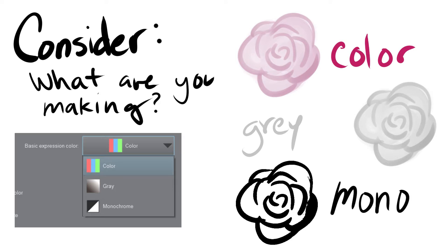And then you have mono, which I have never used in a serious art piece, because it's just black — you don't even get gray. It looks grainy because there's no anti-aliasing. I don't know of any reason you'd use that, except if you do very pixelated line art, you might. But that's something to consider when you're setting up your file.